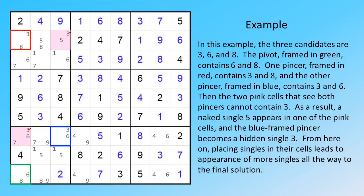Then the two pink cells that see both pincers cannot contain 3. As a result, a naked single 5 appears in one of the pink cells, and the blue-framed pincer becomes a hidden single 3. From here on, placing singles in their cells leads to appearance of more singles all the way to the final solution.